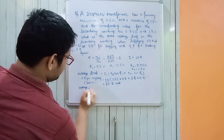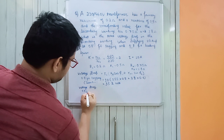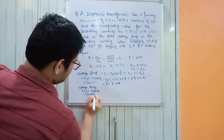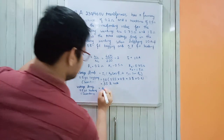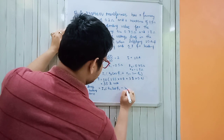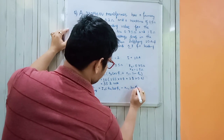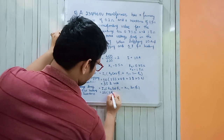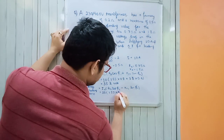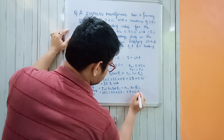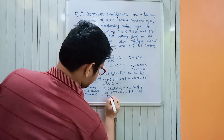For 0.8 power factor leading, the formula changes to: I2 × (R02 × cos φ₂ − X02 × sin φ₂) = 10 × (1.55 × 0.8 − 3.8 × 0.6). The direct answer is −10.4 volt.